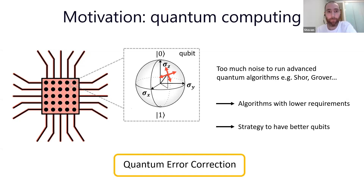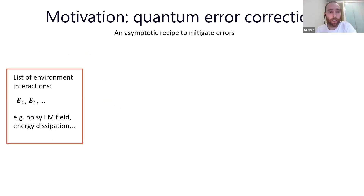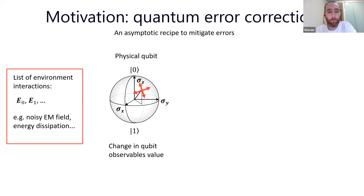Quantum error correction is an asymptotic way to mitigate errors in qubits. By using more and more resources that are already available, we stack them together to mitigate errors more and more. First, we model our environment with a set of possible error operators E0, E1, etc., caused by a noisy electromagnetic field, energy dissipation, and many other causes. These error operators modify the state of the physical qubit — once this happens, the information starts being lost, and the more you wait the more will be lost.